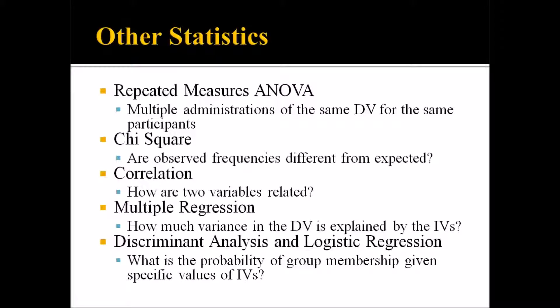A chi-square test answers the question: are observed frequencies statistically significantly different from expected frequencies? For example, say a graduate program has a lot of historical data about the number of students that are successful or unsuccessful in the program — that's a dichotomous categorical variable. For a particular year, you look at the frequencies of successful and unsuccessful students; those are the observed frequencies. The chi-square would tell you if those observed frequencies are statistically significantly different from the expected frequencies from your historical data.